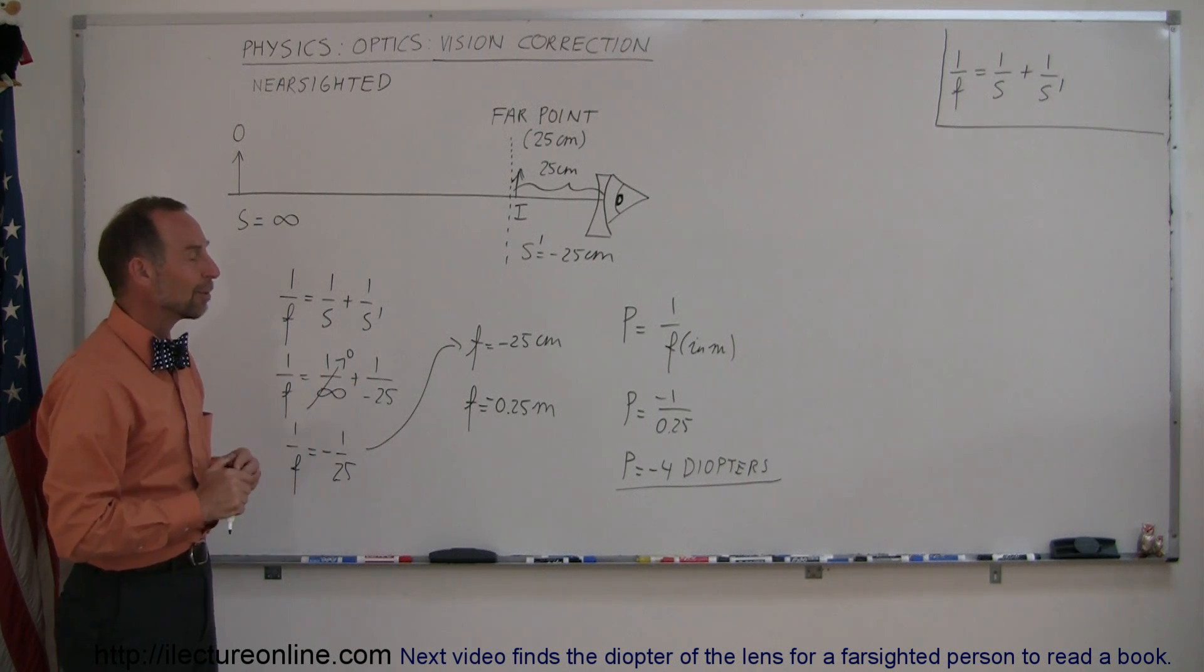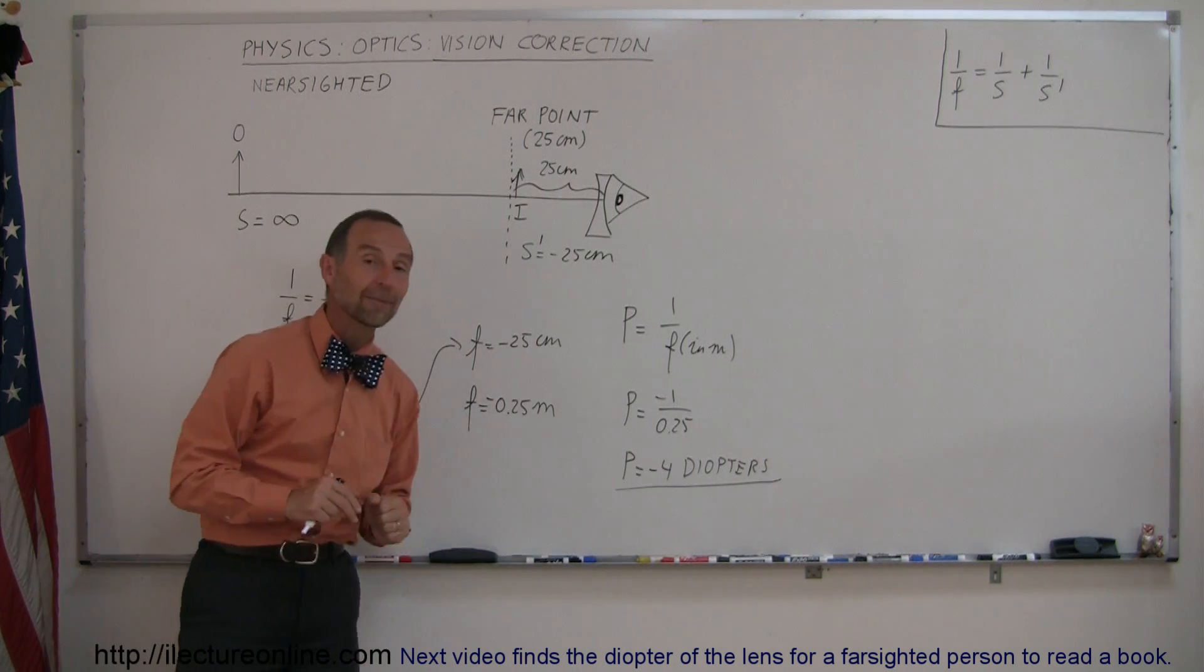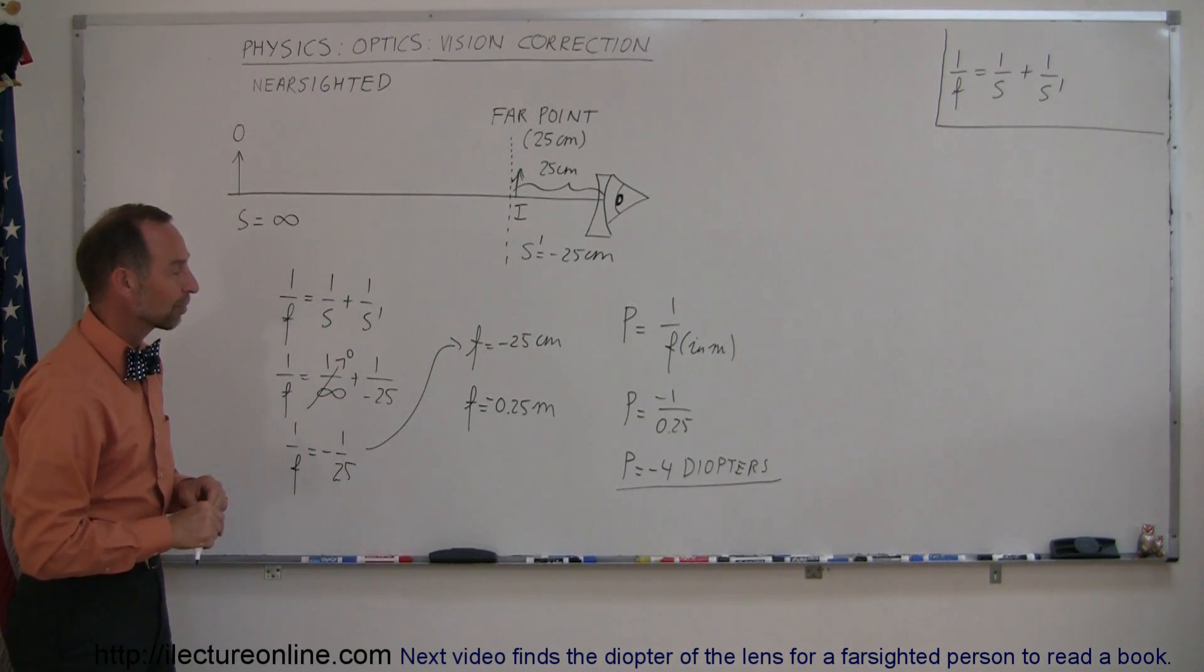So typically, when you buy something at the drugstore or Walmart or something like that, both lenses will have the same power or the same diopters.